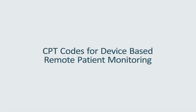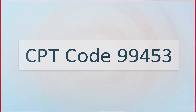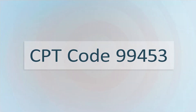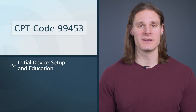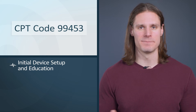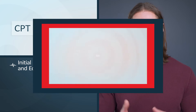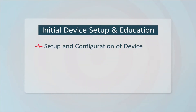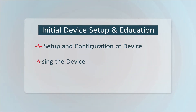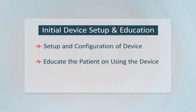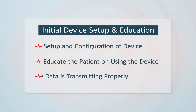As far as the device-based codes, the first you'll need to be aware of is CPT code 99453. This is when the device is given to the patient and you explain to the patient how to properly use it — it's really a setup and education code. For example, if you give the patient a blood pressure cuff, you might explain how to properly adjust the cuff, change batteries, and make sure the data is being transmitted to your practice.